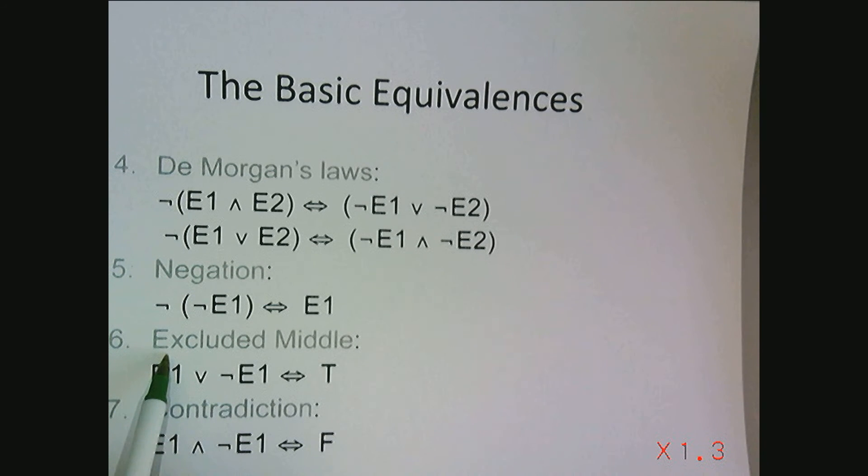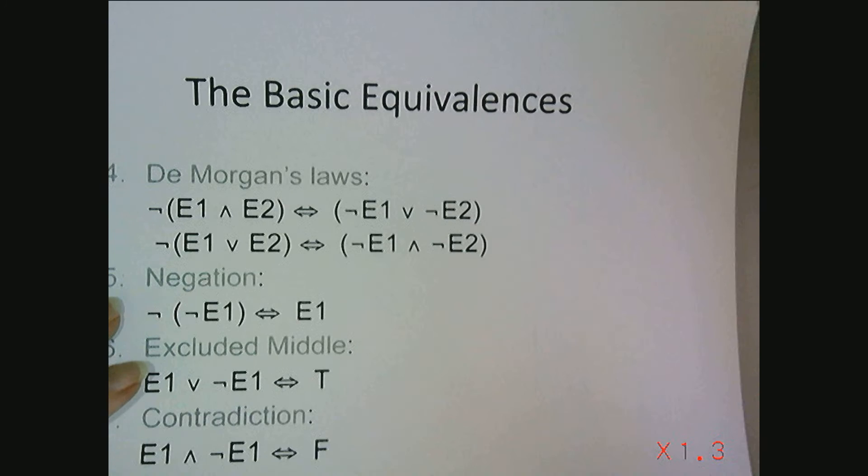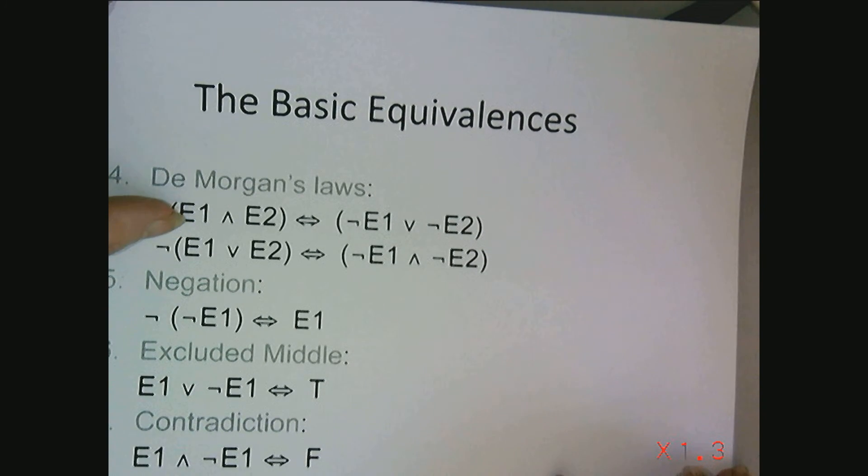Excluded middle is if we have E1 or not E1, that's equivalent to true. Contradiction is E1 and not E1 is equivalent to false. So these are a few of the others.